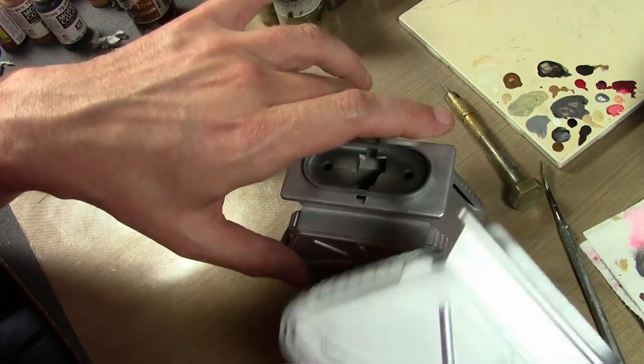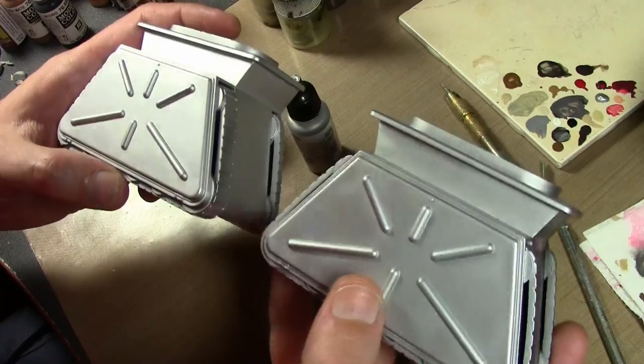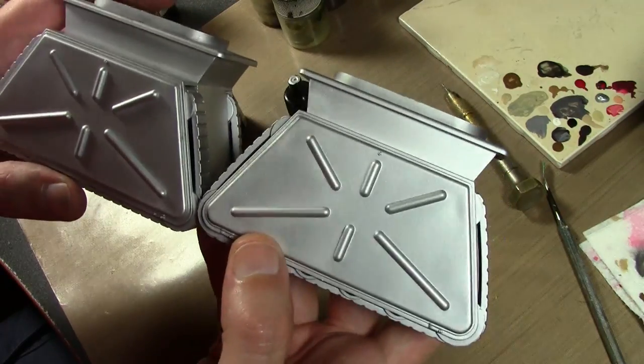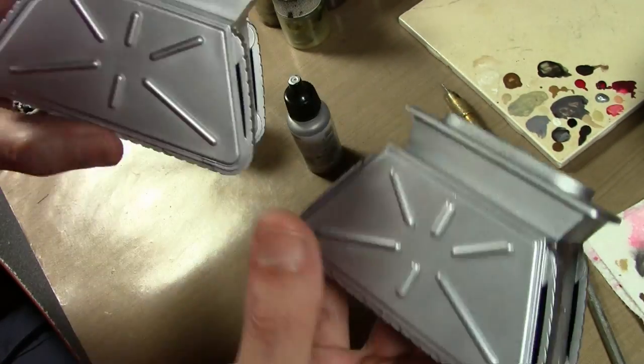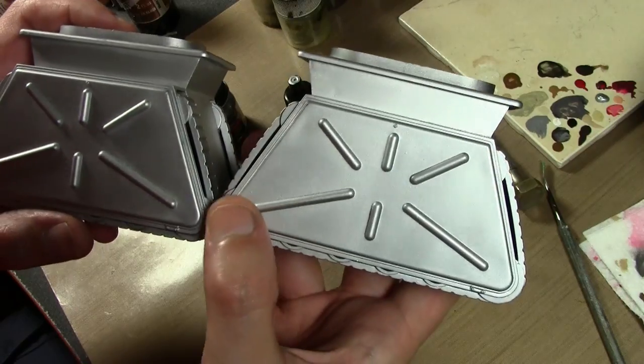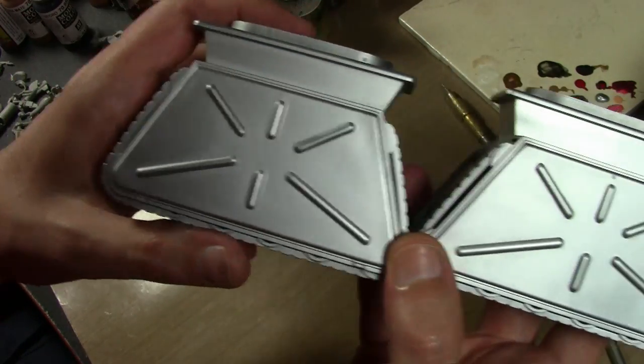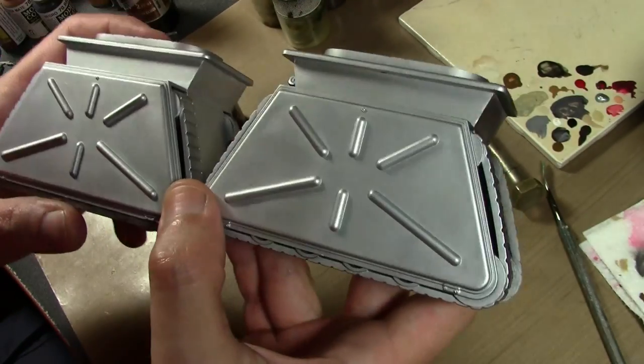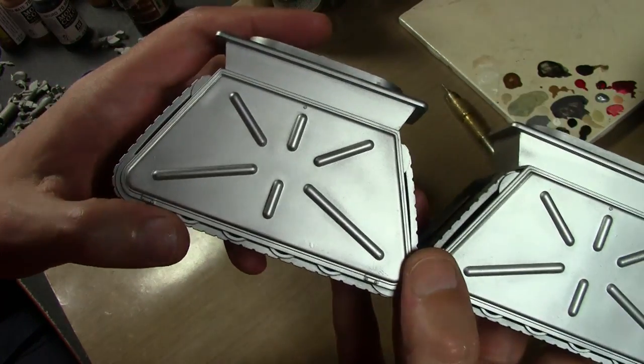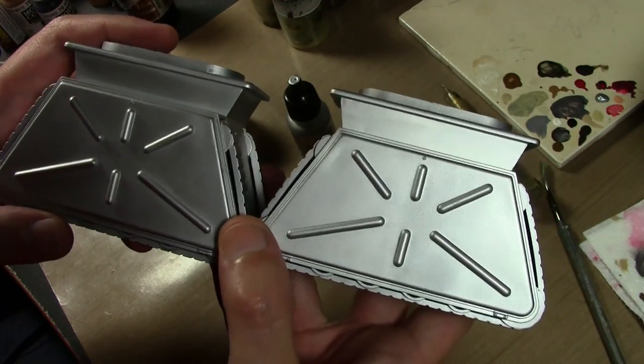I decided to try some Vallejo Air Model Chrome just to see how that would look. I sprayed that over the Testors parts and one of these halves is painted with the chrome and the other one is with the metalizer, and I can't tell the difference. It's the exact same look I'm getting.